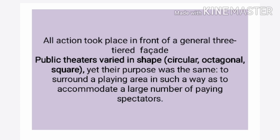All action took place in front of a general audience. Public theatres varied in shape — circular, octagonal, or square — yet their purpose was the same: to surround a playing area in such a way as to accommodate a large number of paying spectators. The public theatres were basically of three shapes, but their main purpose was only one — to surround a particular area so that spectators could easily watch the drama performed on stage.